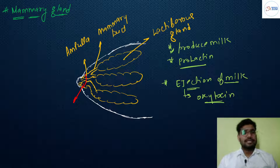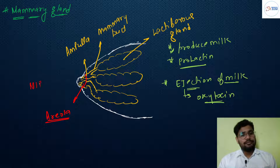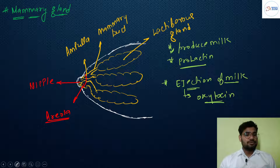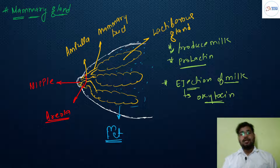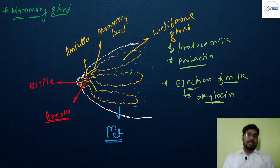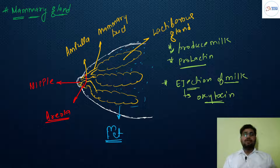The hyperpigmented anterior part is called the areola, and the central projection is called the nipple. All around this structure, there is fatty tissue present. The mammary gland development occurs during puberty and pregnancy, under the influence of hormones estrogen and progesterone.